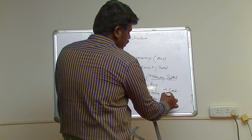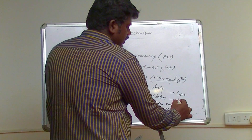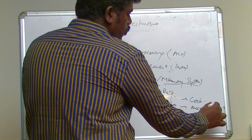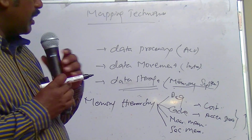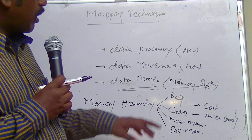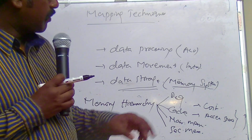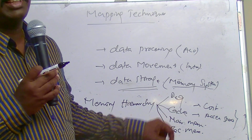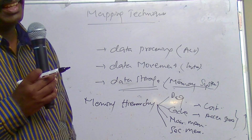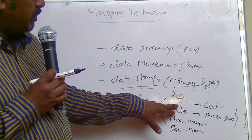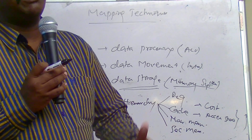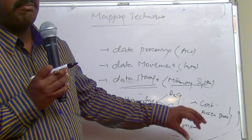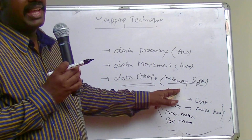The two key parameters compared in the memory hierarchy are cost per bit and accessing speed. We will now deal with how the processor uses the cache — when a cache miss occurs and when a cache hit occurs. Between the cache and main memory, the size varies, so we need to understand how mapping works between main memory and cache.